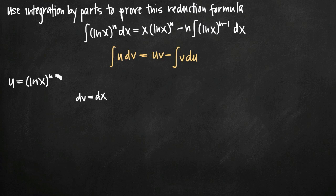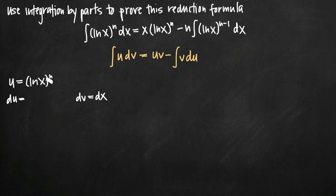Since we're dealing with integration by parts, once you've identified u and dv, you take the derivative of u to get du. We find du by applying the chain rule to ln of x raised to the n. Chain rule tells us to take the derivative of our outside function, leaving the inside function completely untouched, then multiply by the derivative of the inside function. Our outside function is something raised to the n power, and our inside function is ln of x.